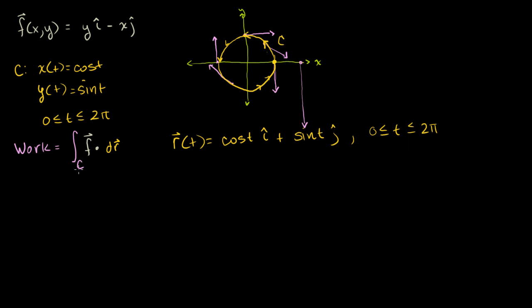One thing might already pop into your mind: we're going in a counterclockwise direction, but at every point we pass through, the field is going exactly opposite our direction of motion. Here we're moving upward and the field is pulling us backward; here we're moving to the top left and the field pushes bottom right. So the field is always doing the exact opposite of what we're trying to do — hindering our motion. This will probably result in negative work, similar to how gravity does negative work when you lift something.